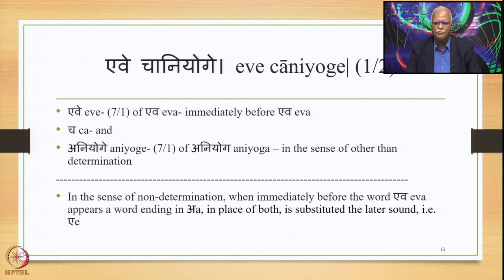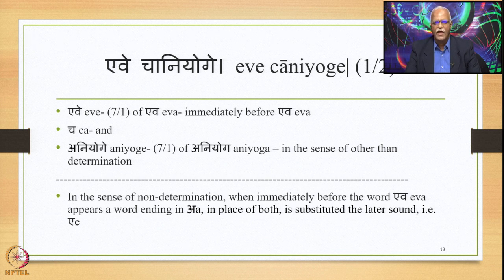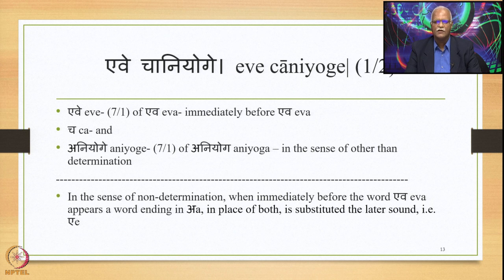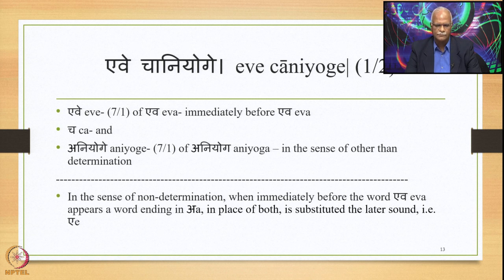Ewa generally conveys emphasis or determination — it qualifies the Visheshana, the Visheshya, or the main verb, generating determination and the elimination of other options. The Vartika states that when the word Ewa is used not in this usual sense of determination, then it is subject to Pararupa Sandhi. So the meaning is: in the sense of non-determination (Aniyogi), when immediately before the word Ewa appears a word ending in A, then in place of both is substituted the latter sound.